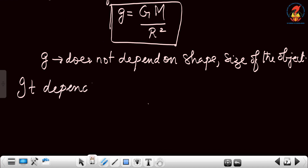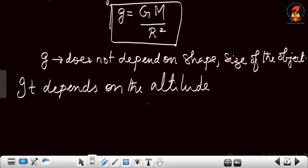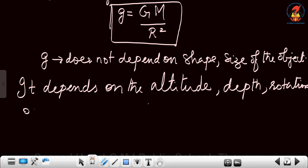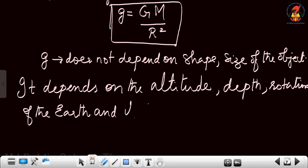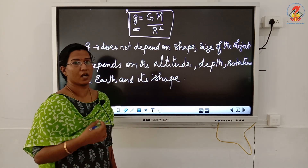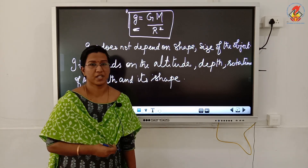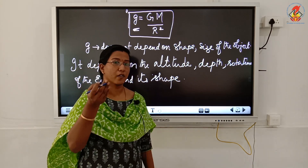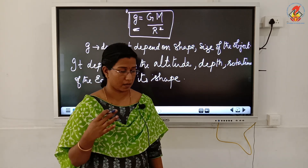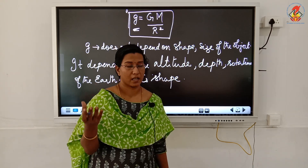The value of g depends on the mass of the earth, the altitude (height from the center of the earth), the depth, the rotation of the earth, and its shape. So small g is a variable term — it is not a constant. Depending upon the position of the object on or near the surface of the earth, the value of g will vary based on the rotation of the earth and the shape of the earth.